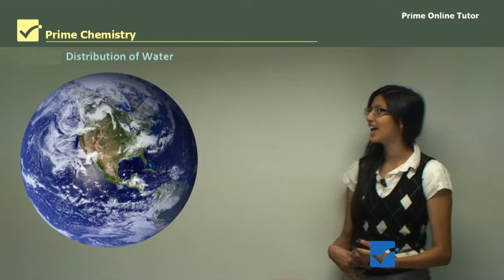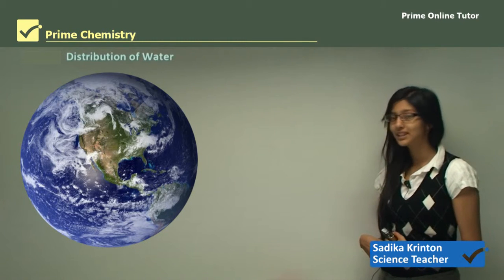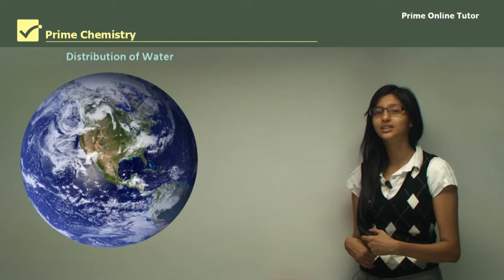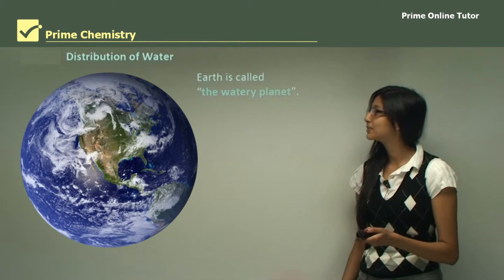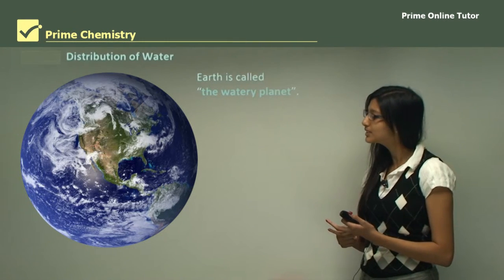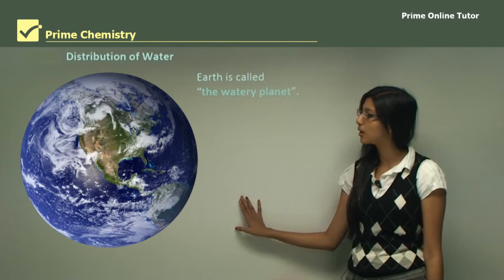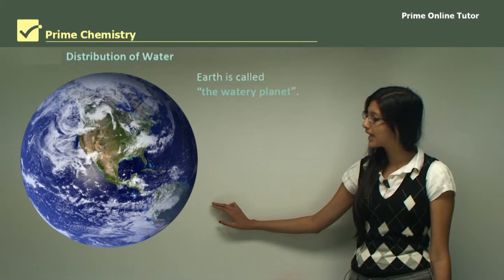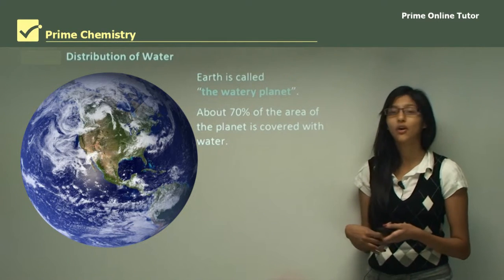Hi everyone. Today we are looking at the topic of water. In this topic we will look at the distribution of water. There are four major layers of earth and we will see how water is distributed in each of those layers and what states water is present in. First, earth is called a watery planet. When you look at this picture you will see that most of it is blue, because most of earth is water. More than 50%, in fact 70% of the area of the planet is covered with water.